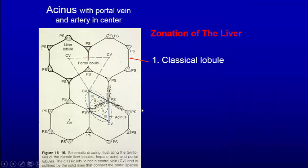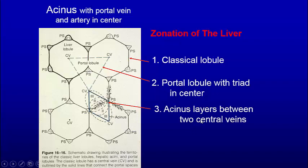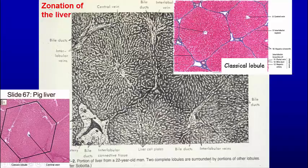When talking about the zonation of the liver, we talk about three different ways of looking at it. One is the classical lobule — central vein in the middle, triads at periphery. There's also a portal lobule with the triad in the center with three central veins around it. The acinus is defined between two central veins. Zone one is where you have the triad, then zone two, then zone three. So we see the zonation of the liver: the classical lobule with triads out here and central vein in the middle; the acinus with its different zones one, two, and three.